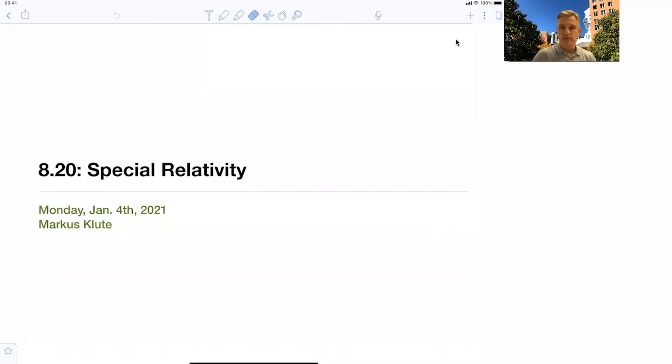Welcome back to 8.20, special relativity. In this short video, we look at the historic backdrop, the time in which Einstein was able to develop the theory of special relativity. What were people thinking? What was the physics landscape of the time? How was technology developed? And how did all those things come together for Einstein to thrive and come forward with those important discoveries in physics?